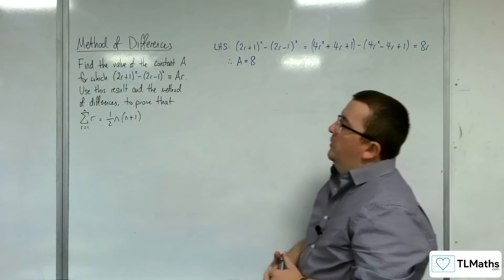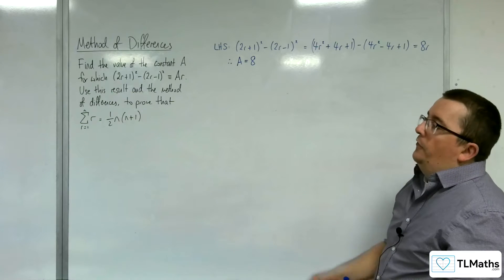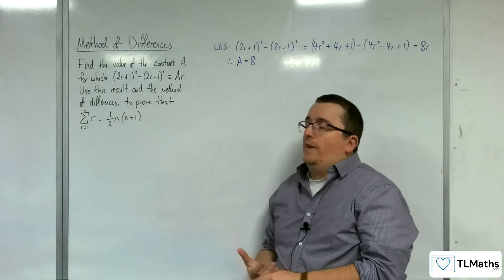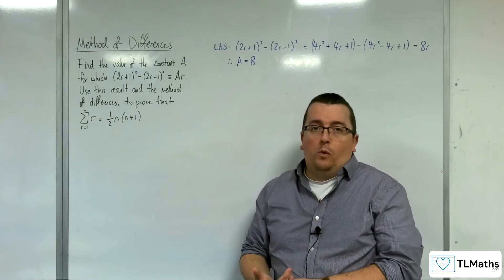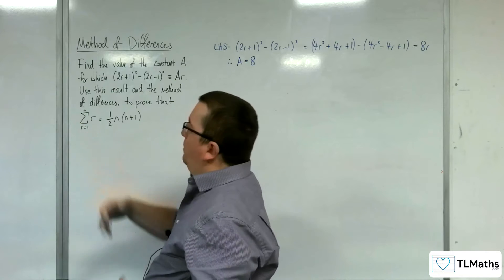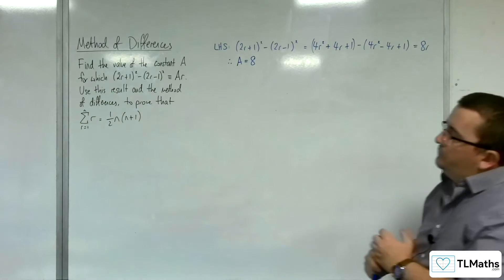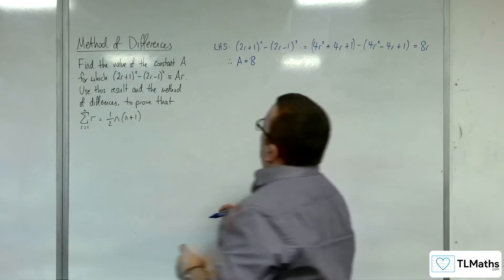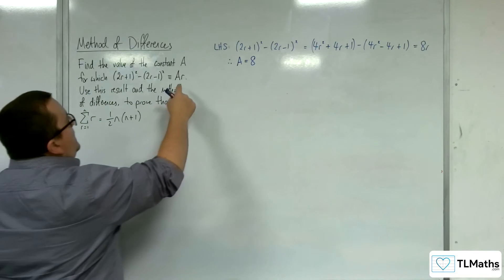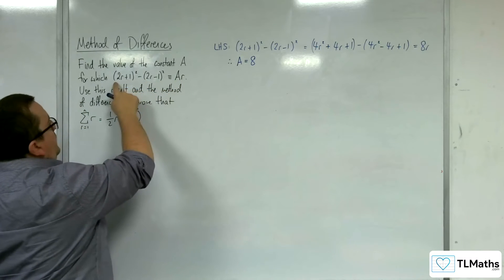Now use this result and the method of differences to prove that the sum from r=1 to n of r is ½n(n+1). We've seen this before already. Effectively, what we've got is we can now say that 8r is equivalent to this.